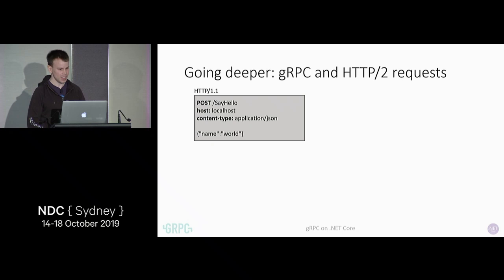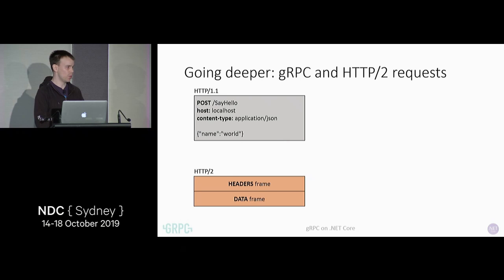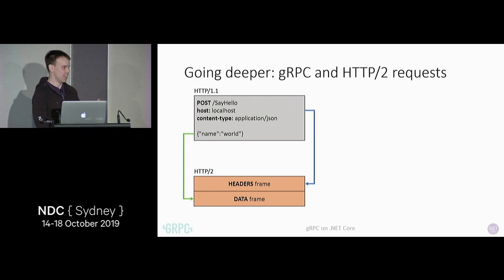Imagine HTTP 1.1 — we've got a text request which starts off with some text-based headers: a POST method, a URL, and also the request body which can be any content. HTTP/2 is a binary protocol built around the idea of framing. We've got a headers frame — as you can imagine the headers go into the headers frame — and then we've got a data frame where the content goes.